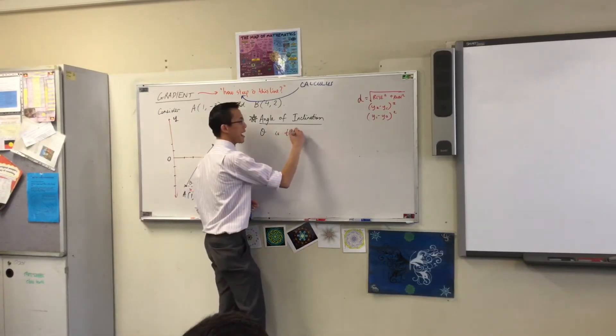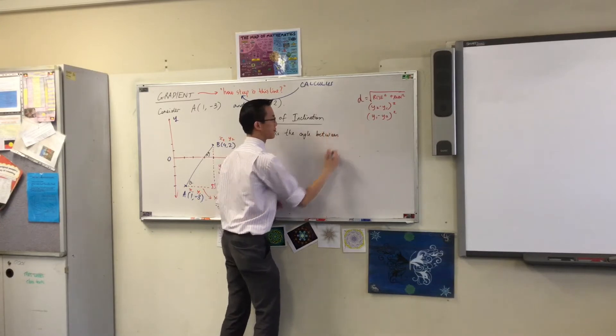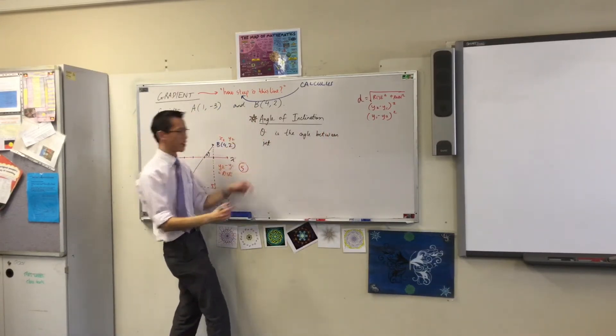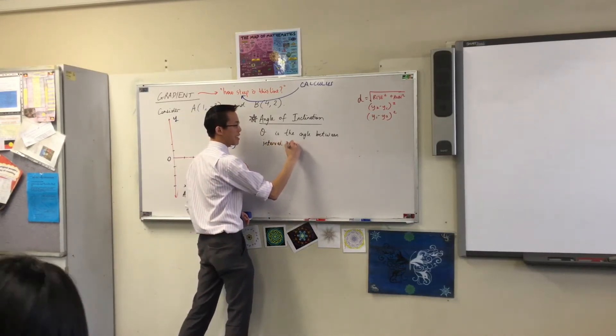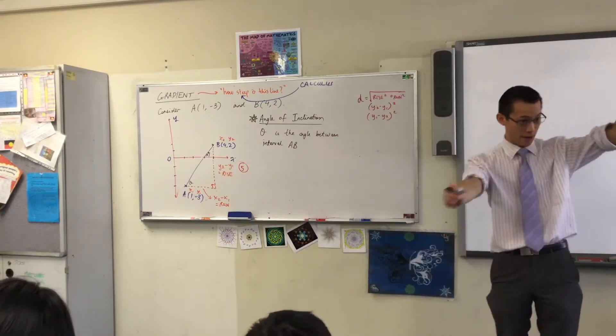Theta is the angle between interval AB, or PQ, or MN, or whatever it is that you're comparing together.